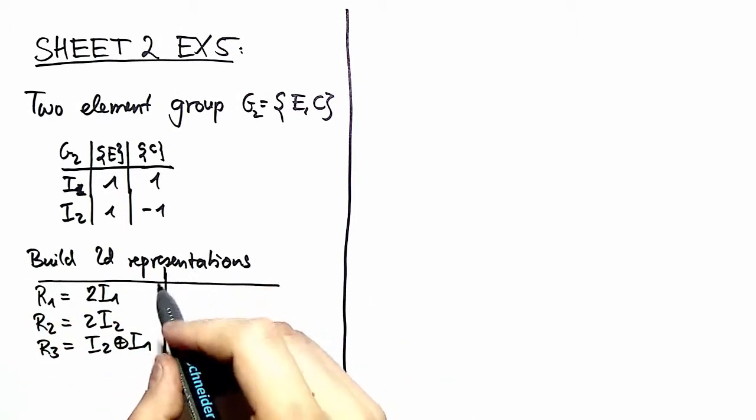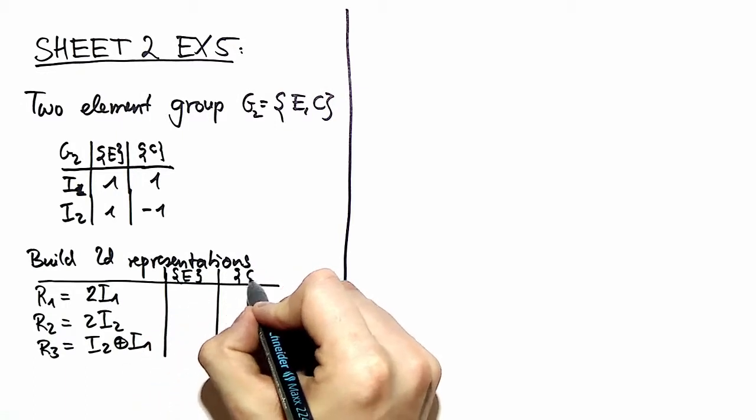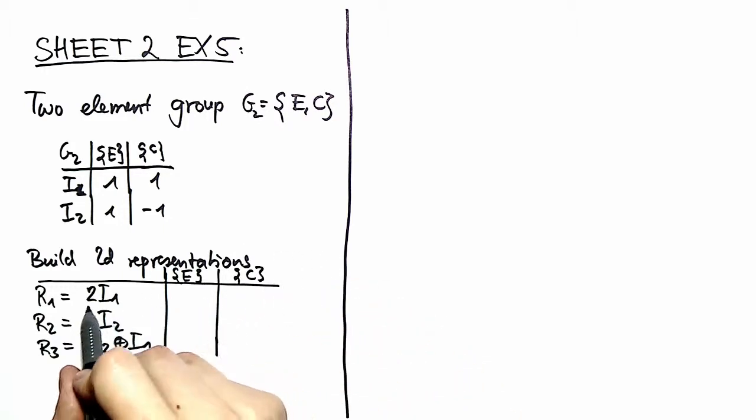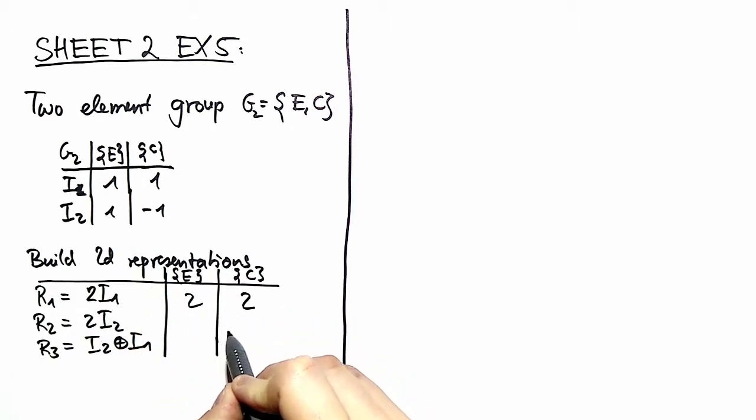If you look at the character table for these, we have for the identity element and for the element we call C: for two times the identity, we can simply add the characters and we have two and two. For the second one, we have two and minus two, and for the third one, we have two and zero.